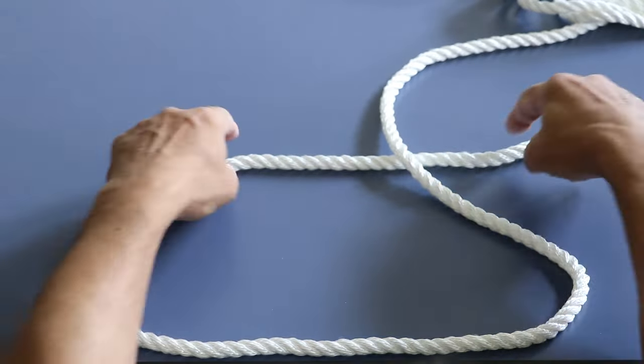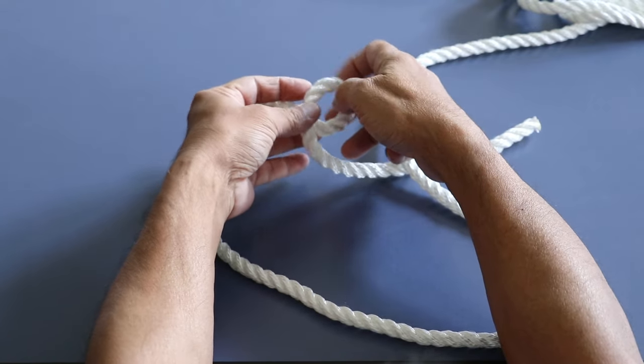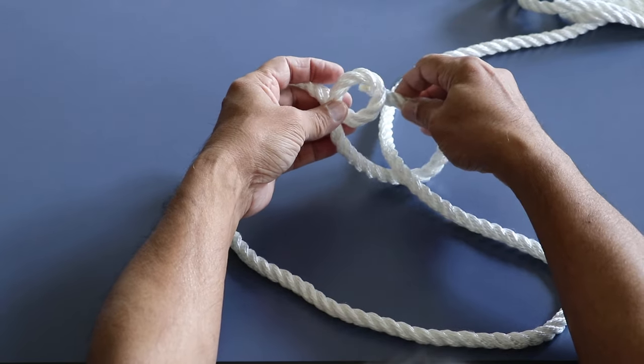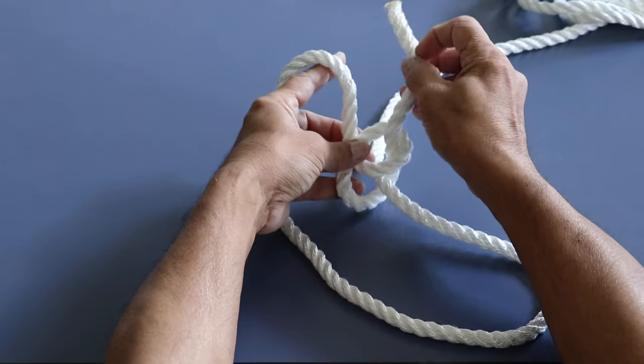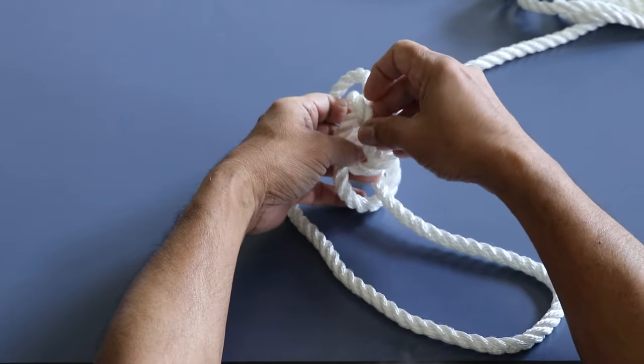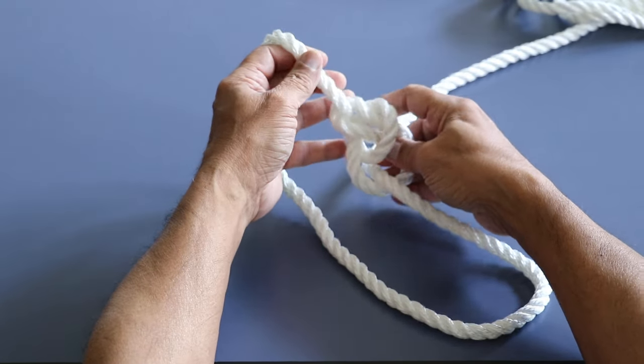I have passed it and then you make a loop, small loop on the left hand side and then pass this rope under the loop and then under this rope and then back into the loop and then pull.